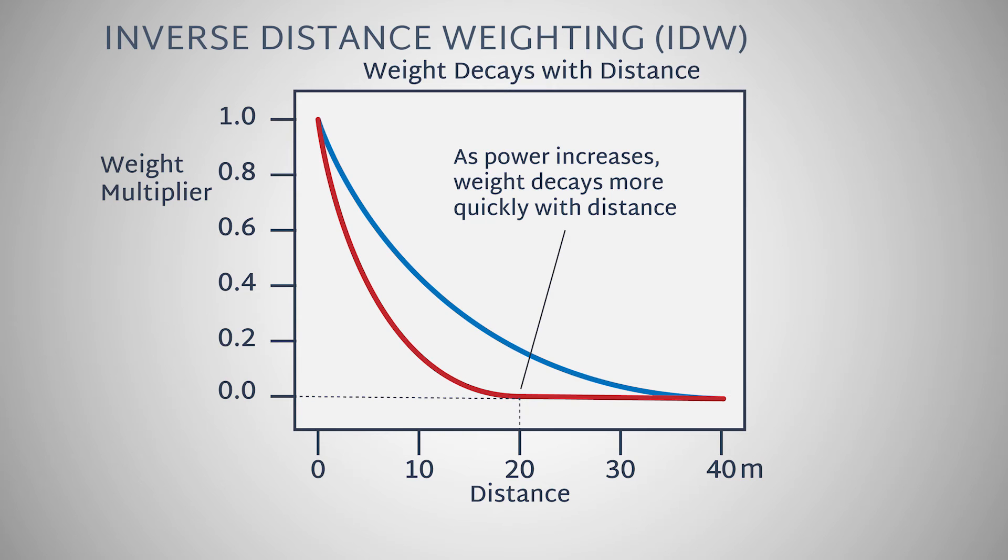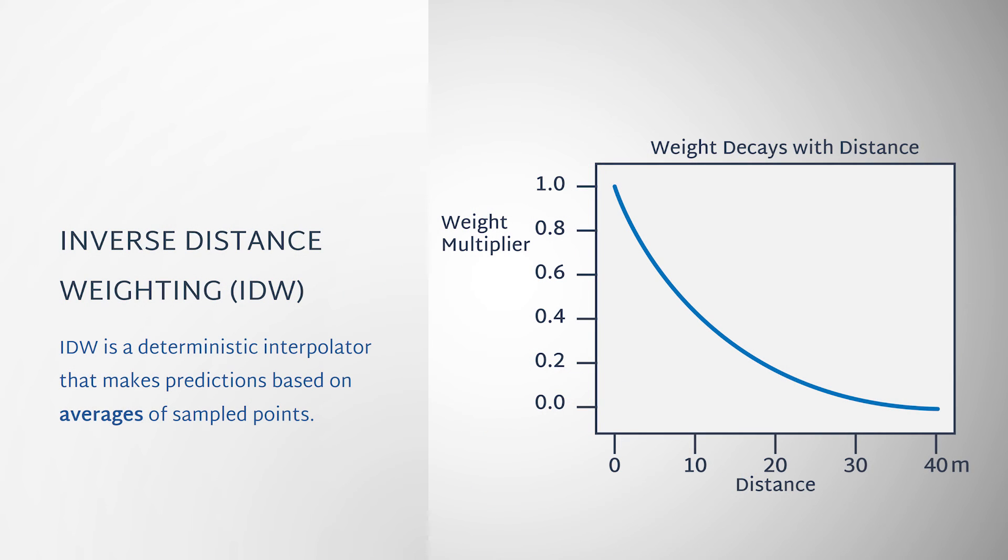Using a lower power will have a smoothing effect as the prediction point is influenced more evenly among the data points at varying distances. IDW is a deterministic interpolator that makes prediction based on averages of sampled points.